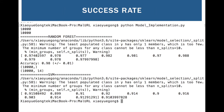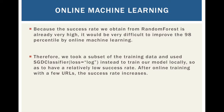We got very good success rates for both methods. For Random Forests, we got 98% accuracy, and for Support Vector Machine we got 91% accuracy. Because the success rate from Random Forests is already very high, it would be difficult to improve the 98th percentile through online machine learning. Therefore, we took a subset of the training data and used the SGD classifier with loss equals log to train our model locally, so as to have a relatively low starting success rate.